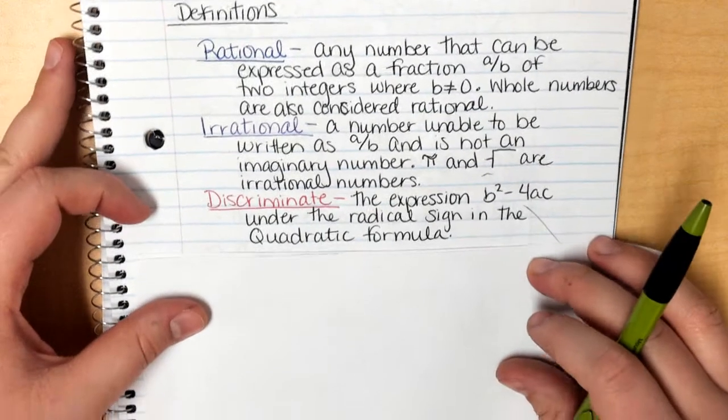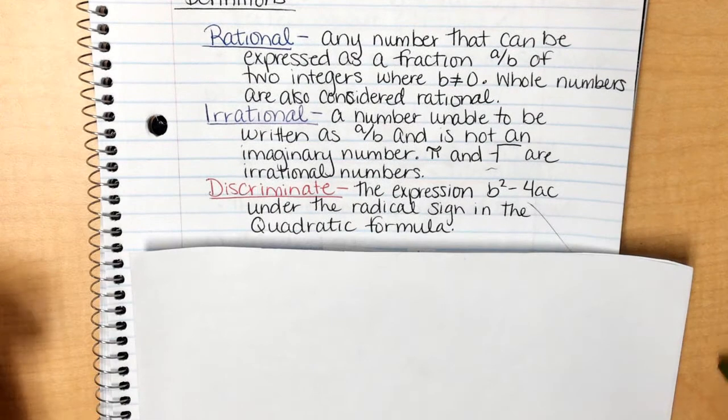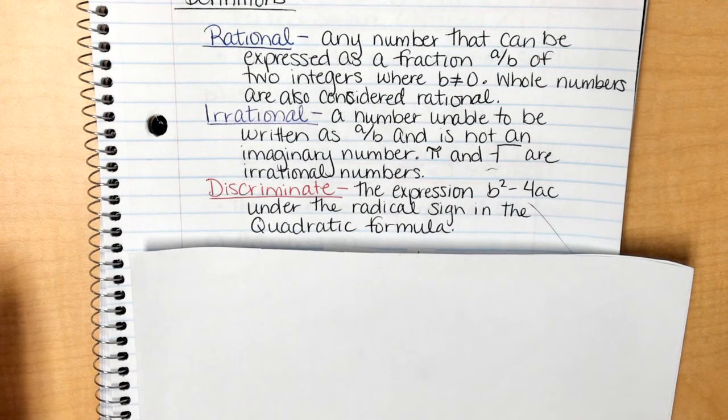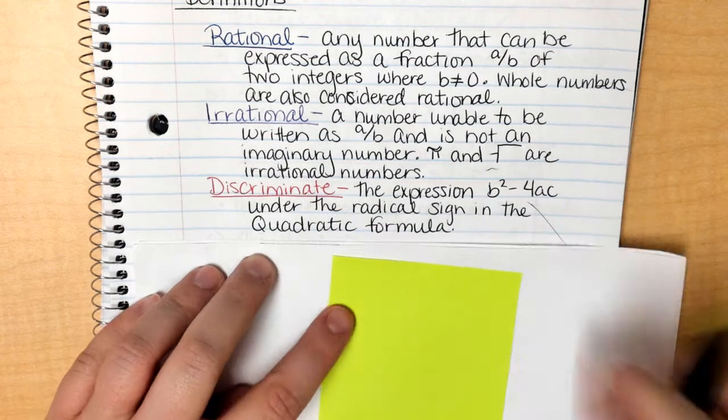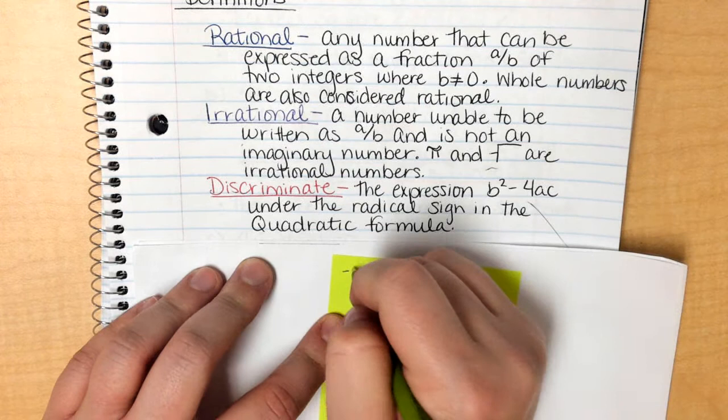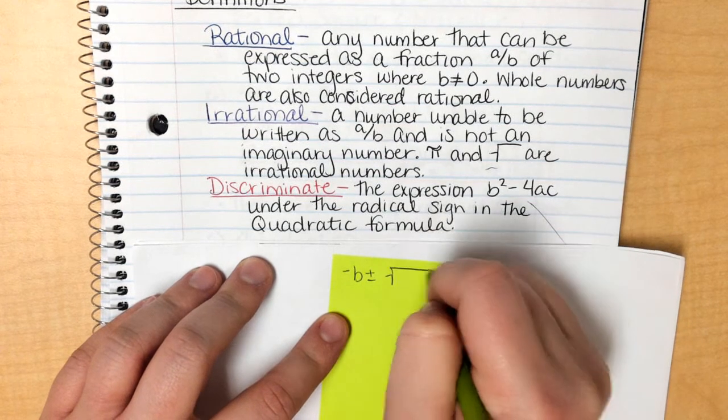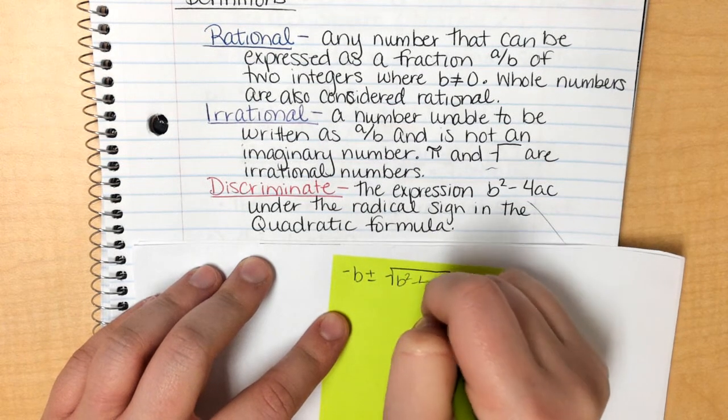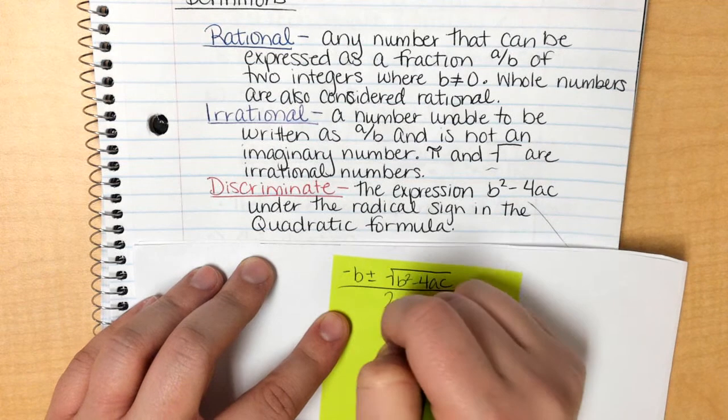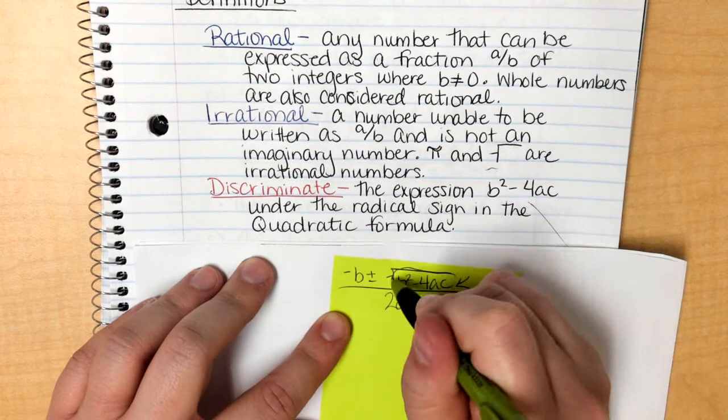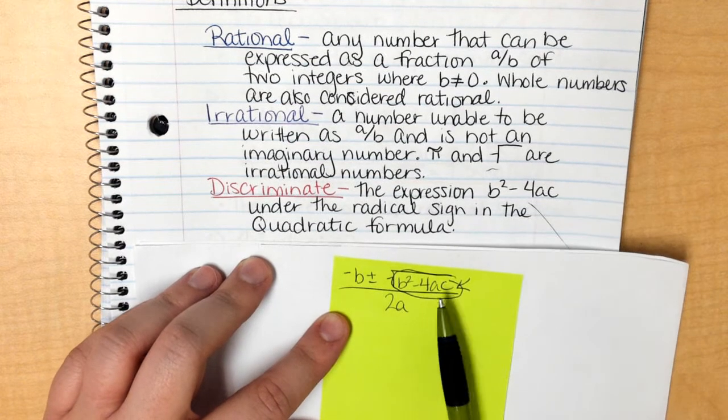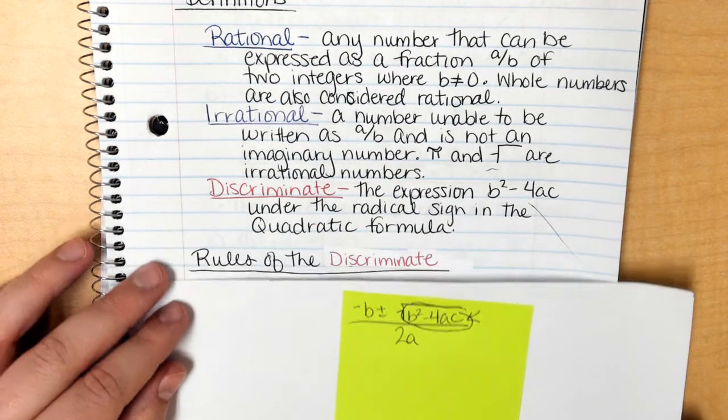Alright, the discriminant. The discriminant is an expression of b squared minus 4ac. So if you remember the quadratic equation, the quadratic formula is negative b plus or minus the square root of b squared minus 4ac all over 2a. So it's talking about this piece right here, just the guy inside the square root. So the discriminant is that guy right here.